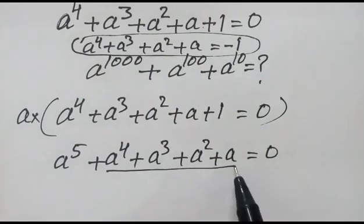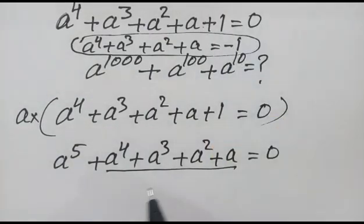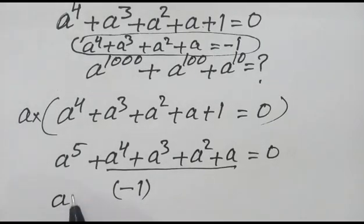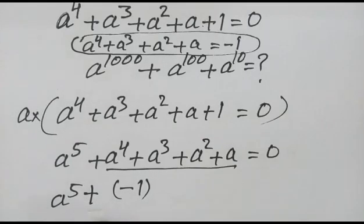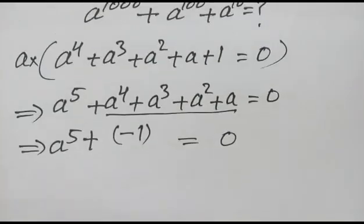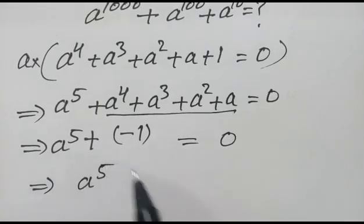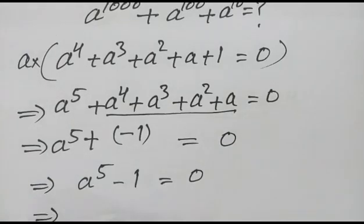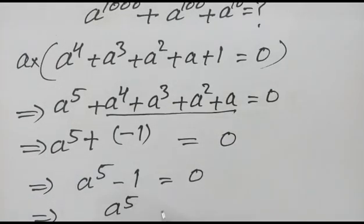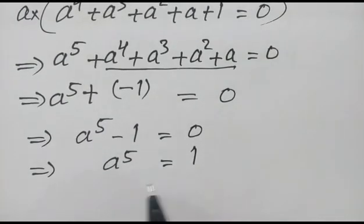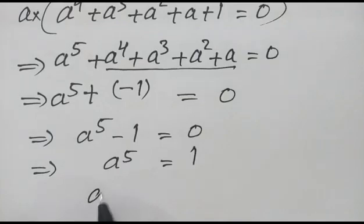So in place of that expression we can write −1. So a⁵ + (−1) = 0, or a⁵ − 1 = 0, which gives us a to the power 5 is equal to 1.